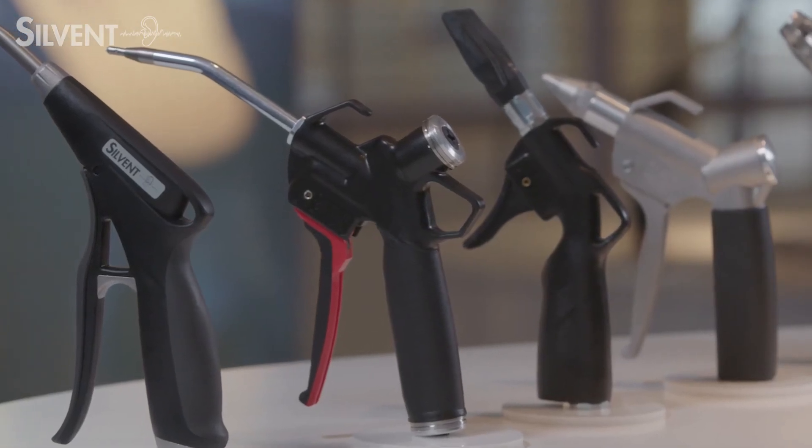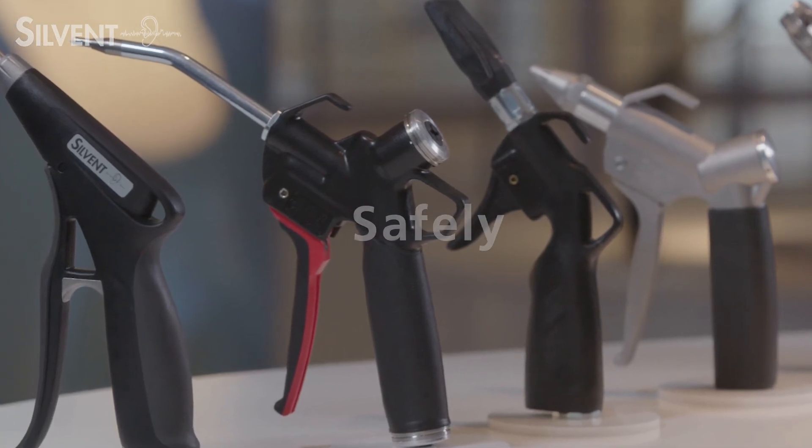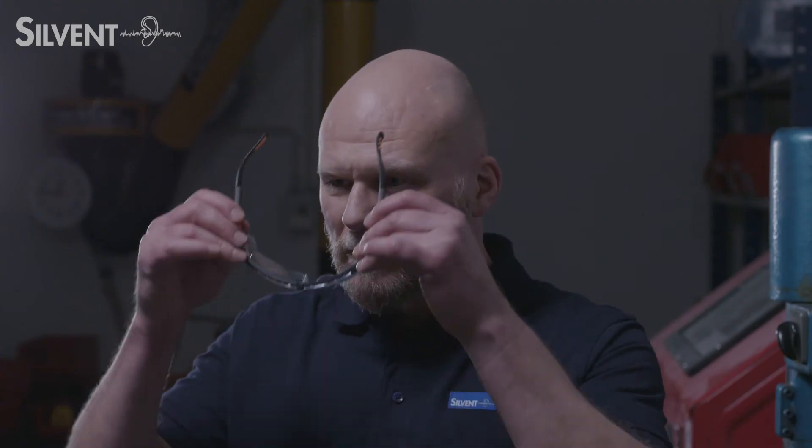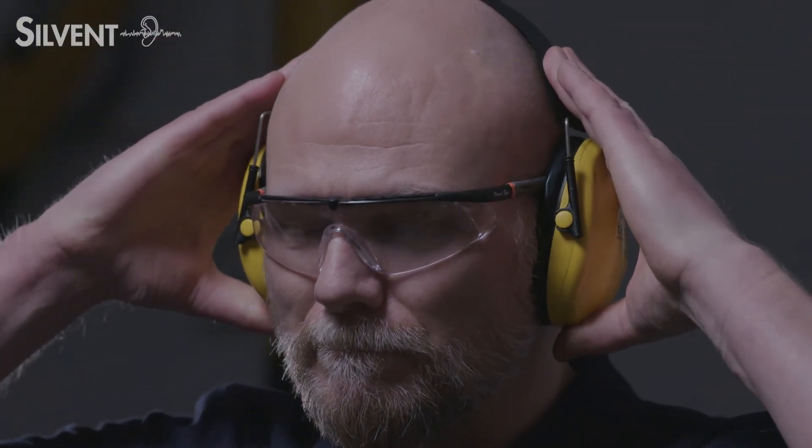Sylvent's OSHA compliant air blow guns will help you meet OSHA's requirements and work safely and efficiently with compressed air blowing. Always remember to wear appropriate PPE like hearing protection and safety glasses when blowing with compressed air. Now you know how to operate blowing with compressed air in a safe way.